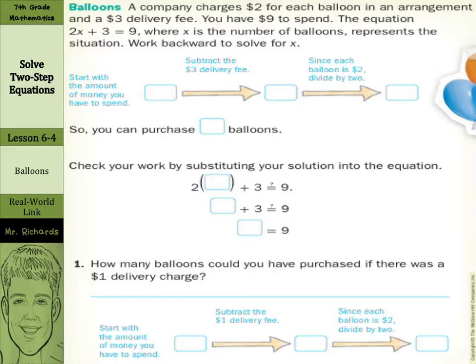Work backward to solve for x. We're going to start with the amount of money we have to spend, which is $9. We're going to subtract the $3 delivery fee. 9 minus 3 is 6. And since each balloon is $2, we can divide by 2. 6 divided by 2 is 3. So you can purchase 3 balloons.